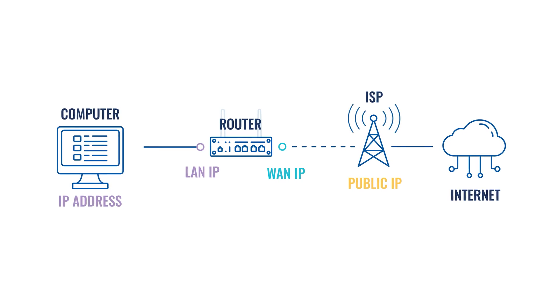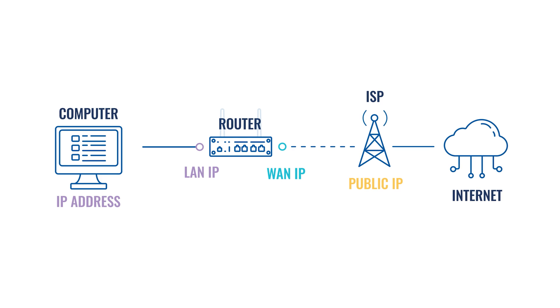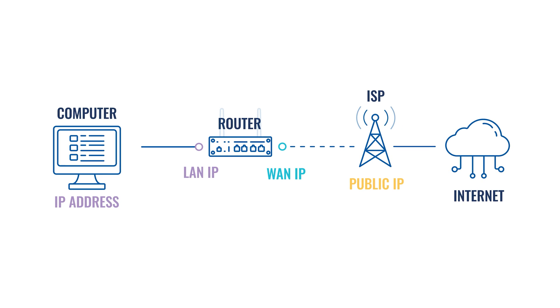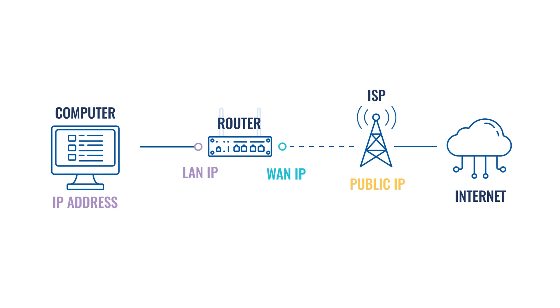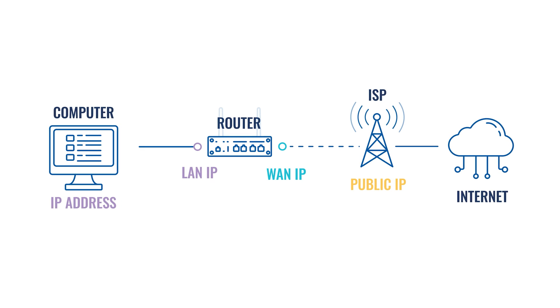A public IP address is a unique identifier that lets devices find each other and share the required information. With the help of various other protocols, an intricate data exchange system is created, which we call the Internet. A public IP address can be further categorized as static, dynamic, or shared.